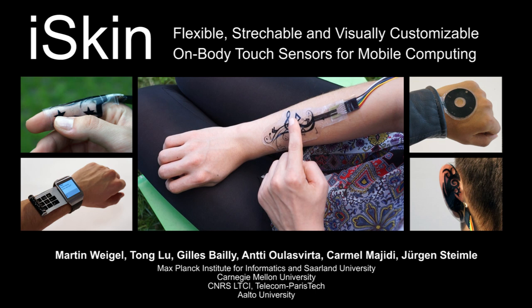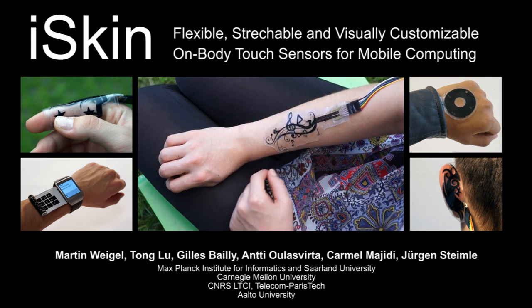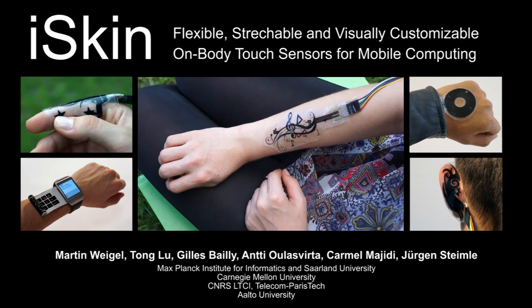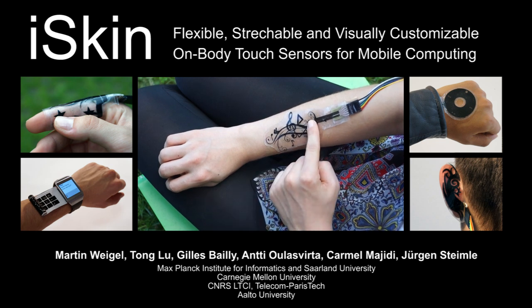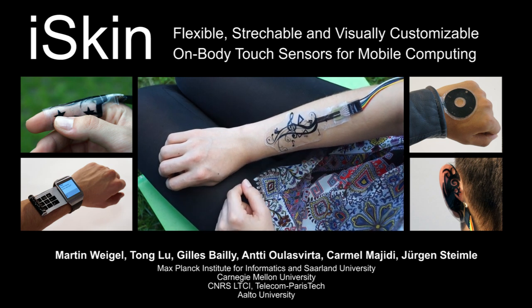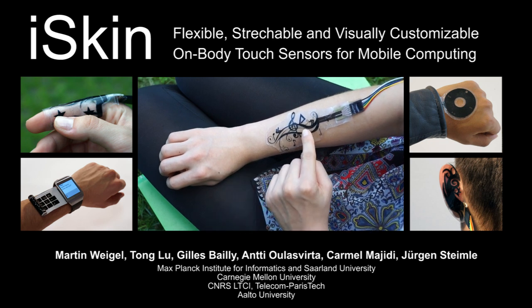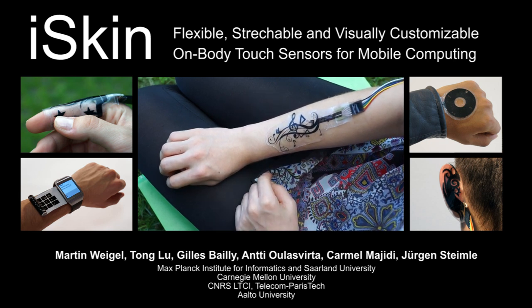In this video, we presented iSkin, a skin-worn touch sensor. It is thin, flexible, stretchable, and visually customizable. iSkin enables new forms of on-body input for a wide range of application scenarios in mobile and ubiquitous computing interaction.